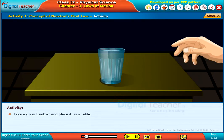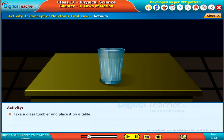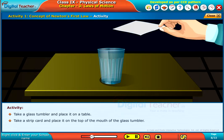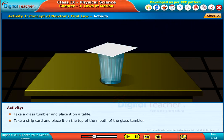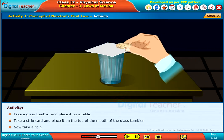Take a glass tumbler and place it on a table. Take a strip card and place it on the top of the mouth of the glass tumbler. Now take a coin.